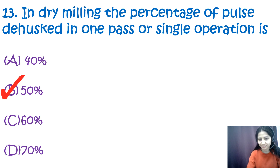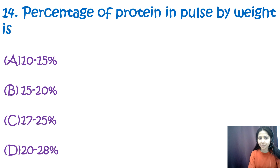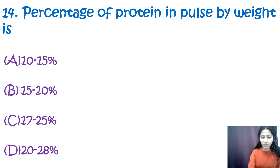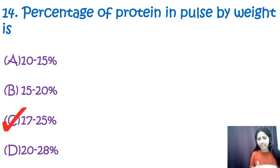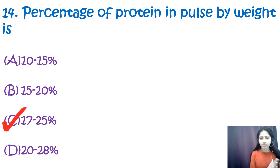Question 14: The percentage of protein in pulses by weight is 10–15%, 15–20%, 17–26%, or 20–28%? The correct option is C — approximately 17 to 25% by weight. Pulses such as chickpeas, green gram, peas, horse gram, beans, lentils, and black gram are rich sources of protein, ranging from about 19 to 26 grams per 100g.